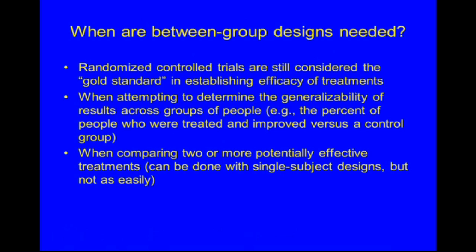When are between-group designs needed? Randomized control trials are still considered the gold standard in establishing the efficacy of treatments. They're also helpful when attempting to determine the generalizability of results across groups of people — for example, the percent of people who were treated and improved versus a control group. They're useful when comparing two or more potentially effective treatments, though this can be done with single-subject designs, but it's not as easily done.